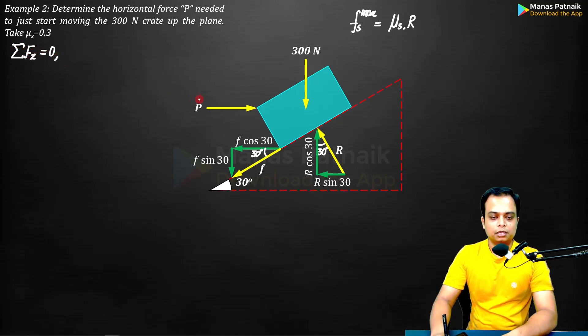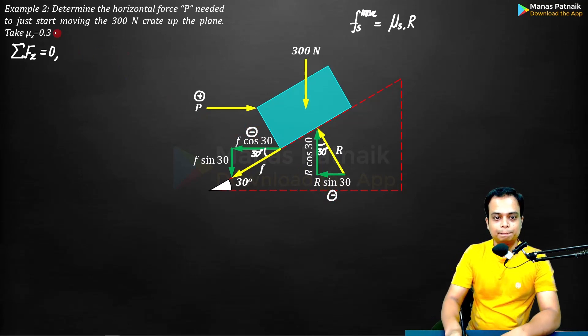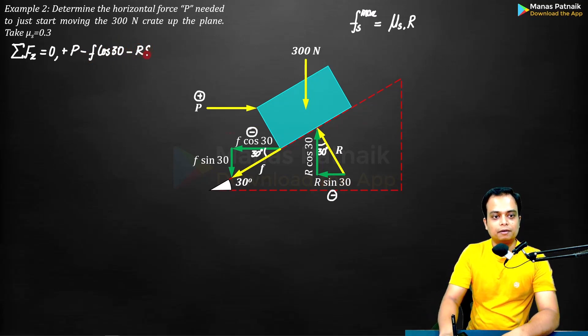This is to the right, take it as positive. This is to the left, negative. This is to the left, negative. Write them down. It's going to be plus P minus f cos 30 minus f cos 30. Anything else? R sin 30 again negative, minus R sin 30.